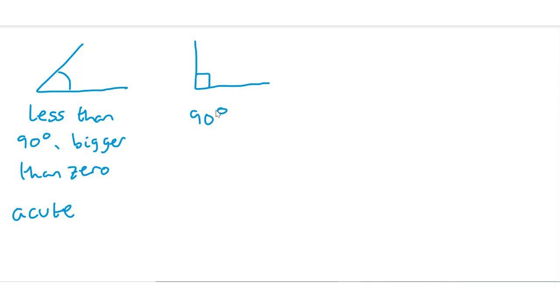And then obtuse angles are angles which are greater than 90 degrees, so they are wider angles, the bigger angles, sorry, than the right angle.